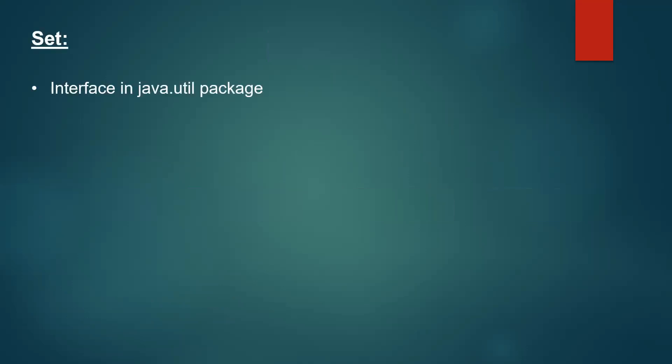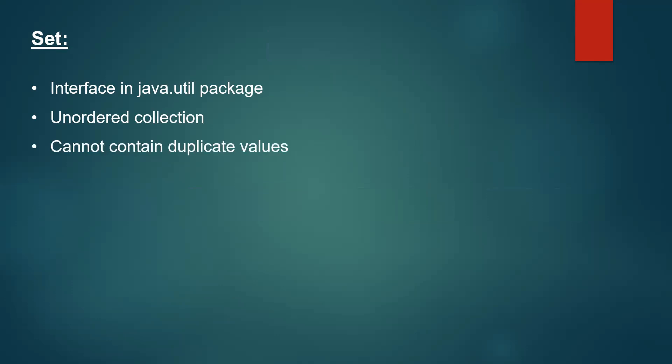Now let us understand what set is. Set is also an interface present in the java.util package. But unlike list, set is an unordered collection, meaning whenever we add elements to a set, we can't guarantee that it follows the order of insertion — it might or might not. Also, set cannot contain duplicate values.